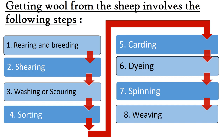Let's have a quick look at the different steps involved in getting wool from sheep. Starting from rearing and breeding, then shearing, then washing or scouring, after that sorting, then step 5 carding, dyeing, spinning, and finally weaving.